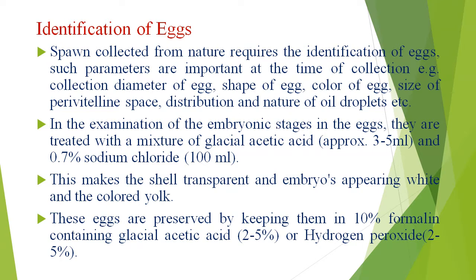How do we identify the egg? There are so many ways. Spawn collected from nature requires the identification of eggs. Such parameters are important at the time of collection — for example, the diameter, shape, color, size of perivitelline space, distribution and action of oil droplet, etc. These are the factors on which we can identify the eggs.